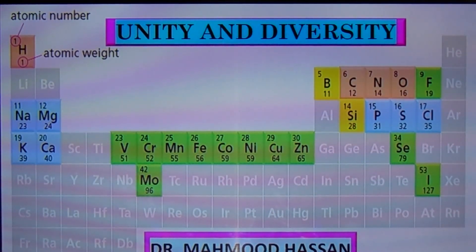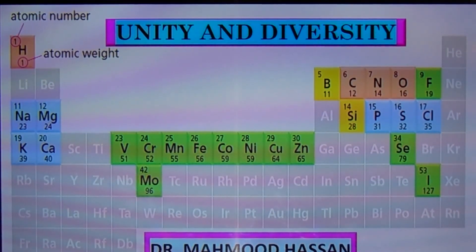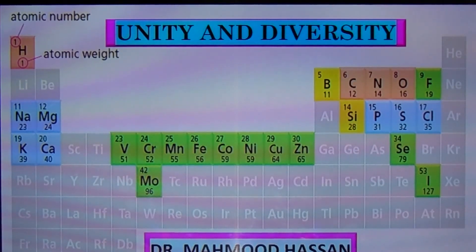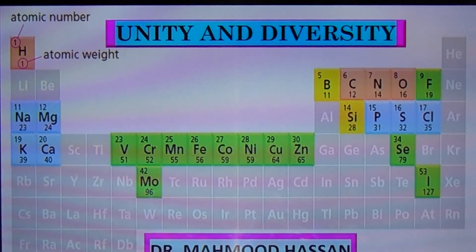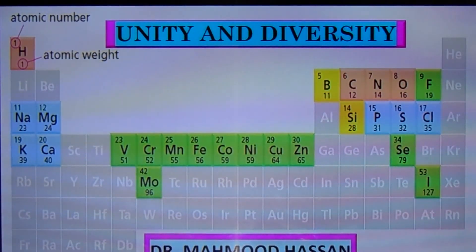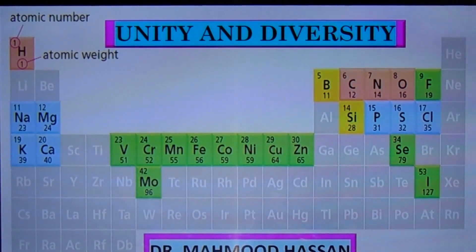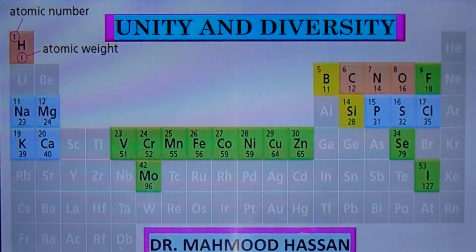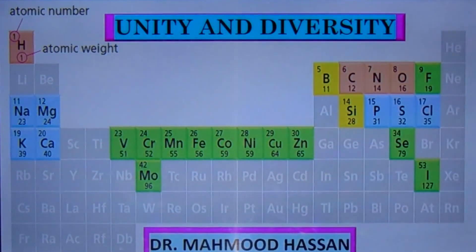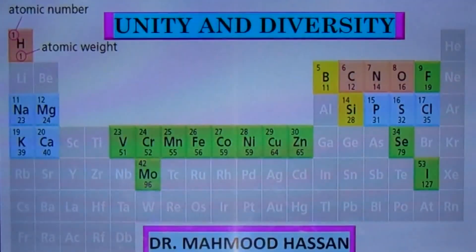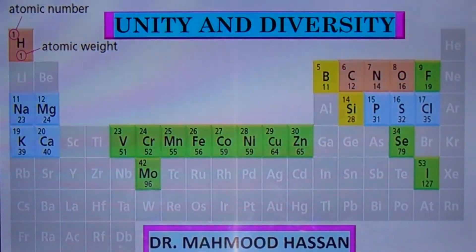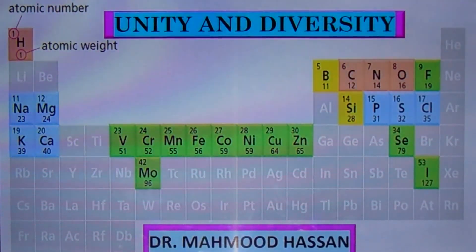An additional seven elements highlighted in blue together represent 0.9% of the total number of atoms. Other elements shown in green are required in trace amounts by living organisms. These elements combine in different proportions to form biological molecules.